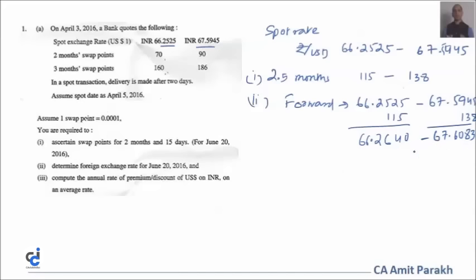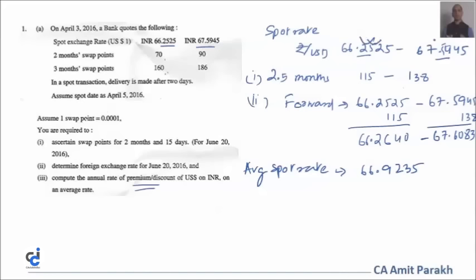For part three, we compute the annual rate of premium or discount of US dollar on INR at an average rate. I'll assume they're referring to the 2.5-month forward. The average spot rate is (66.2525 + 67.5945) / 2 = 66.9235. The average 2.5-month forward rate is (66.2640 + 67.6083) / 2 = 66.9362.